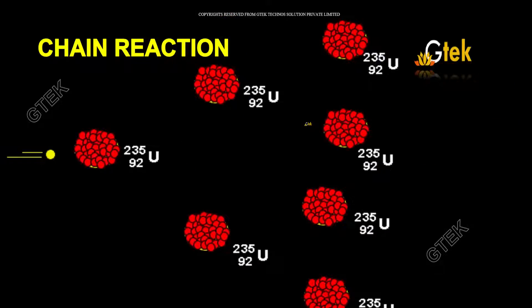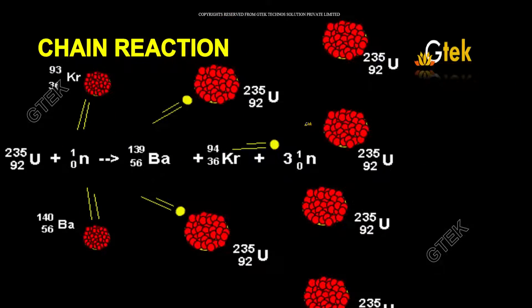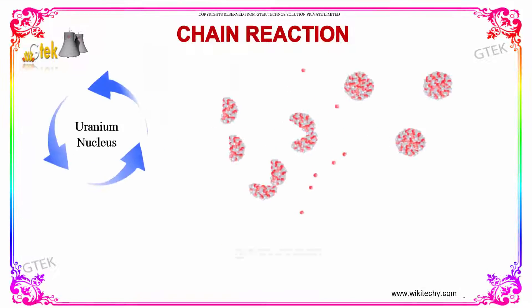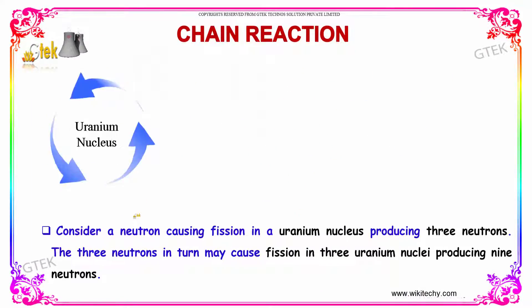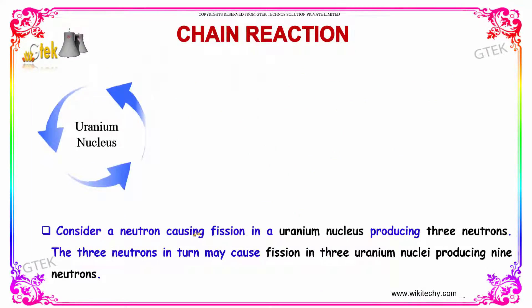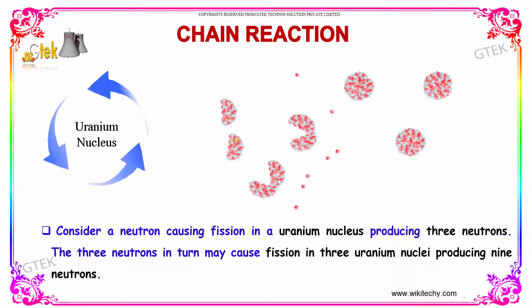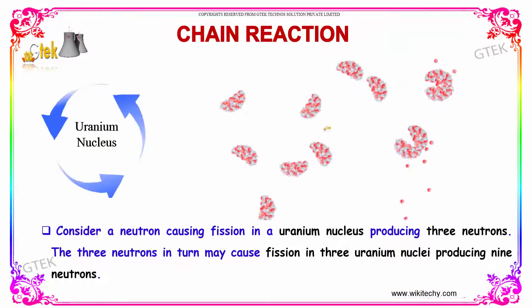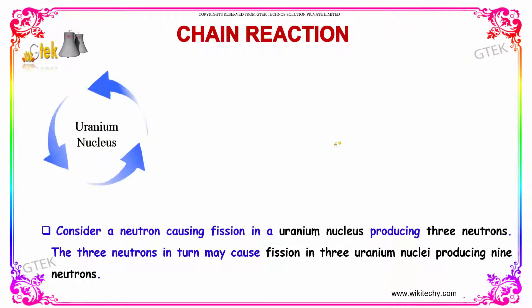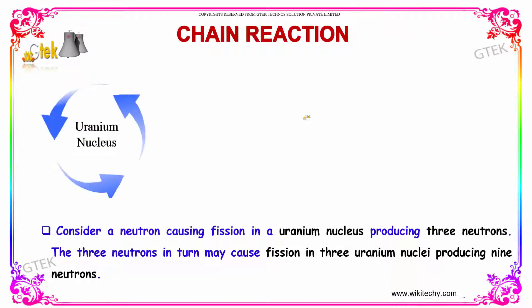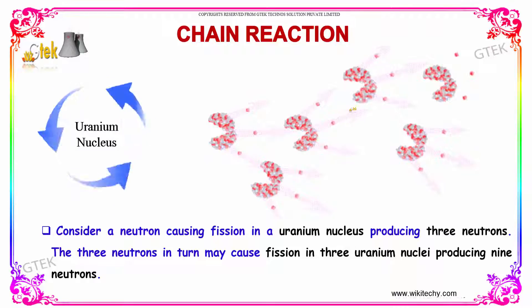Now, let's look into the chain reaction. Consider a neutron causing fission in a uranium nucleus, producing three neutrons. These three neutrons in turn may cause fission in three uranium nuclei.